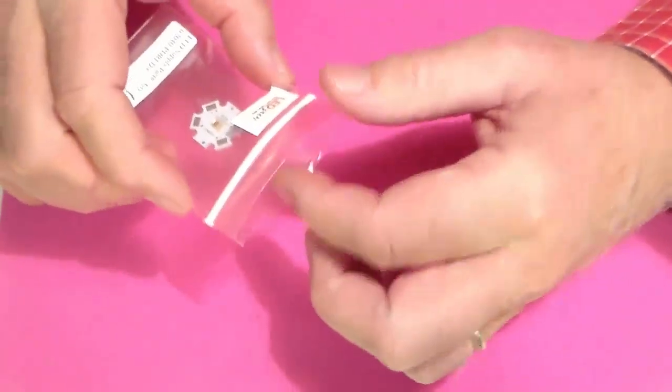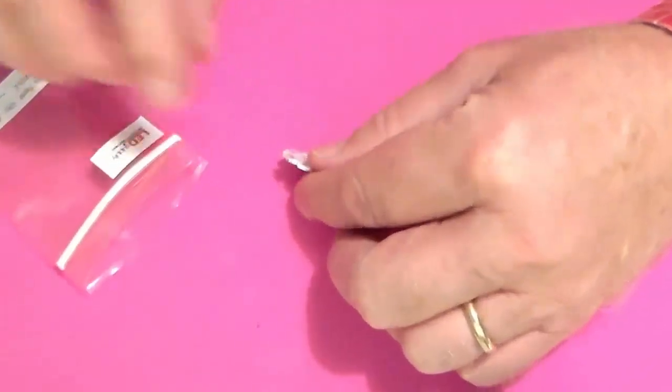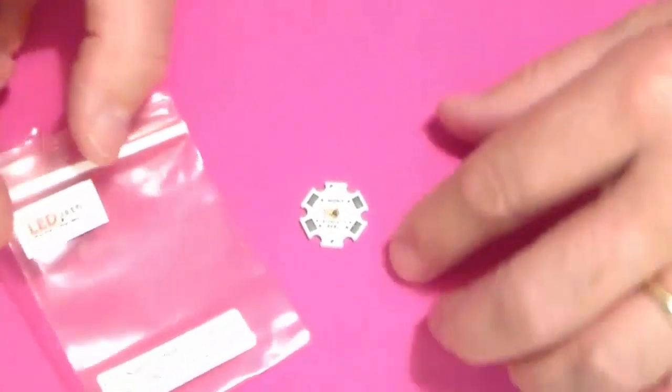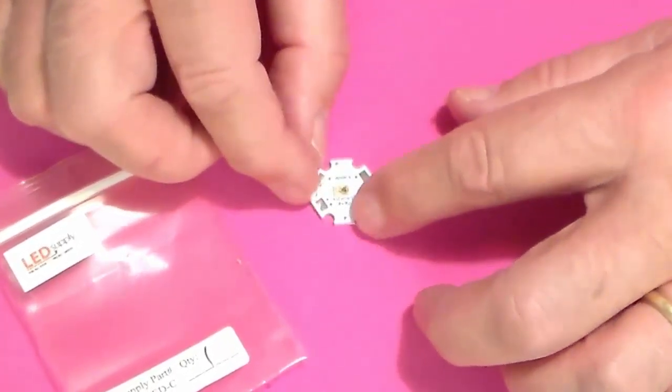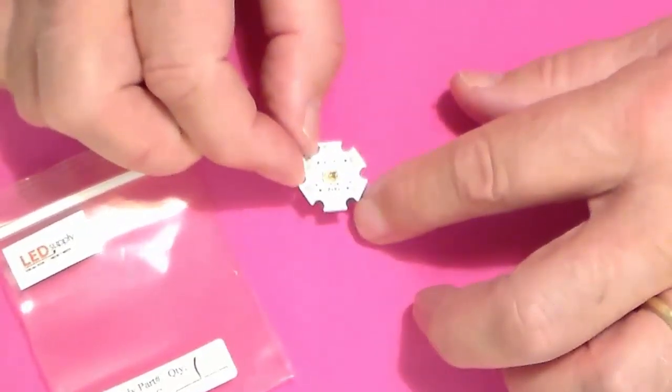Hey everybody, welcome back. I've got something over here I want to show you. I just picked these up. These are high powered, high intensity LEDs that I just got from LED Supply. This is a deep red LED, runs at about 700 milliamps, and it can be really bright. Let's light one of these up.